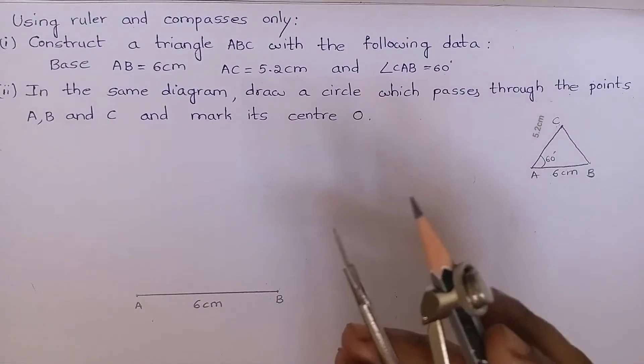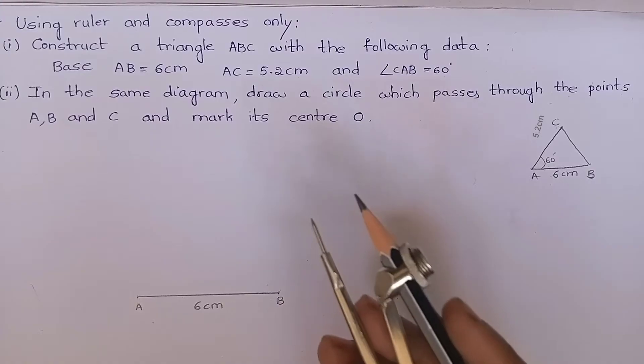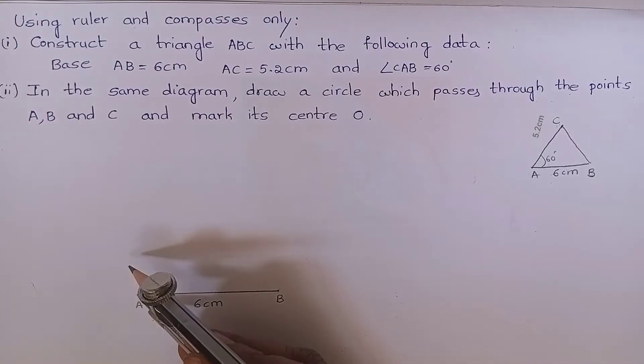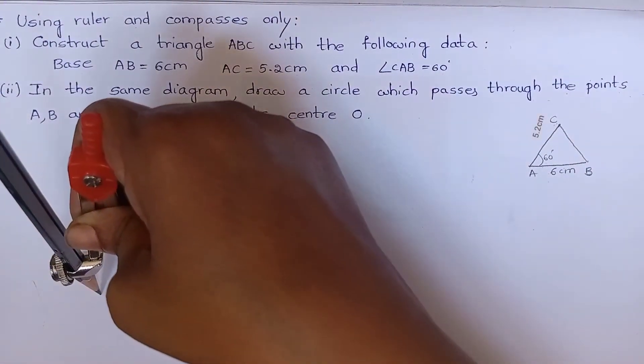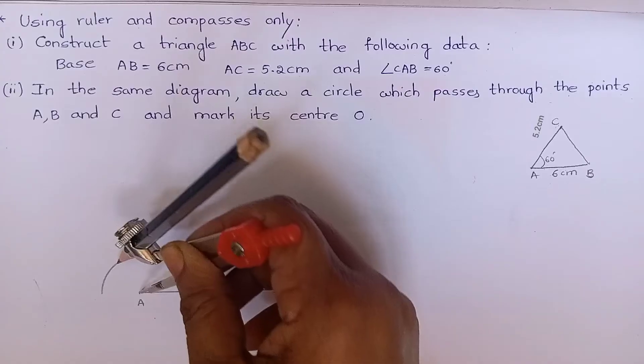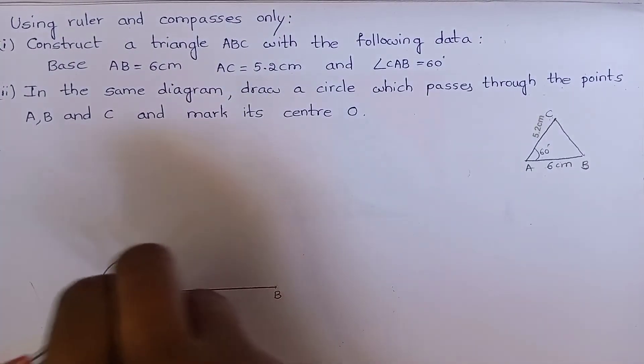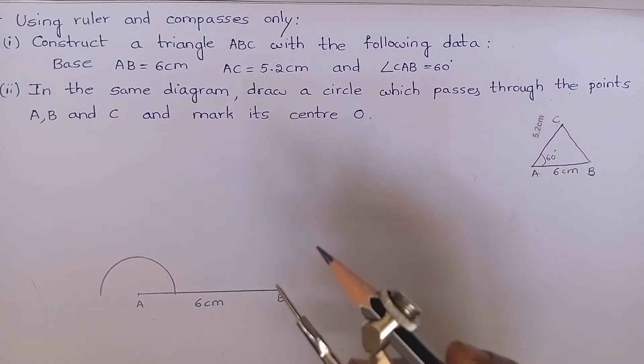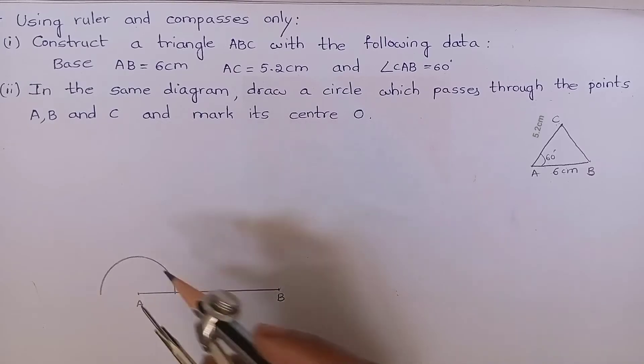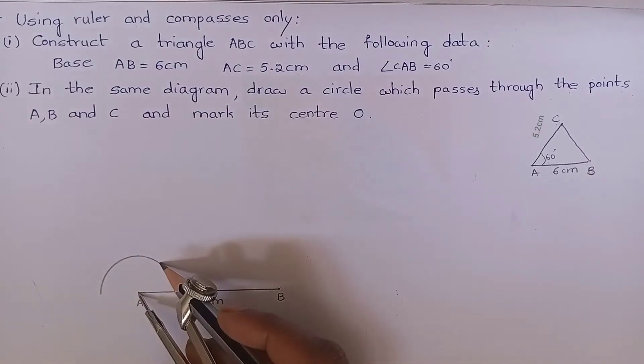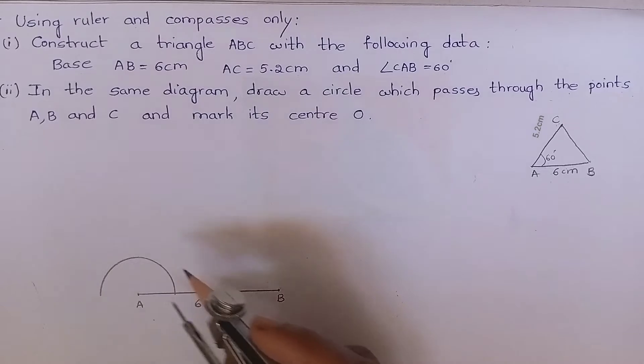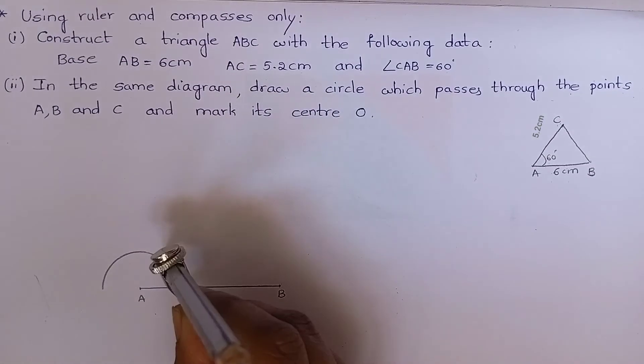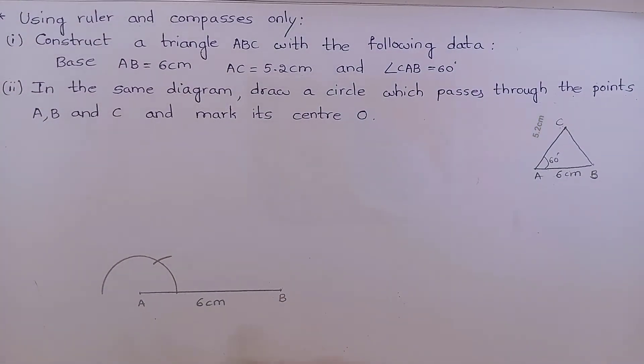You can take any measurement of your choice. Keep the compass at point A and mark an arc like this. Listen carefully. You should not change the measurement. See here, by taking the same measurement, you have to cut an arc from this point. Now join this.